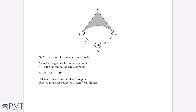We've got a kite shape here. Kites are quadrilaterals, and all angles in a quadrilateral sum to 360 degrees. So angle ABC is equal to 360 minus 90 minus 90 minus 120, which gives us an answer of 60 degrees. We can mark this onto our diagram.